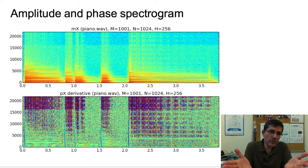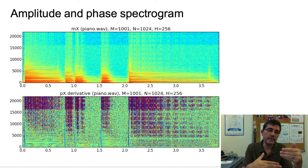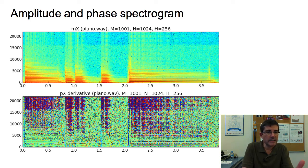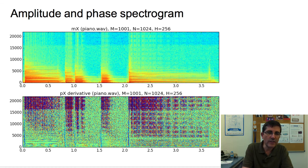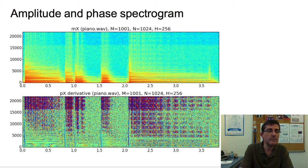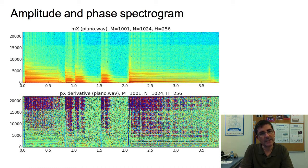Typically we only show the magnitude spectrum, but the phase also has valuable information. Here we see both the magnitude spectrogram and the phase spectrogram — specifically the derivative of the phase. By taking the derivative, we can see when there is a flat region versus when the phase changes a lot. We can also see the horizontal structure that relates to stable peaks corresponding to harmonics. A lighter color means more stability, while a darker color means a bigger phase slope. The phase spectrum is a little harder to read, but it contains very interesting information that we will be using.